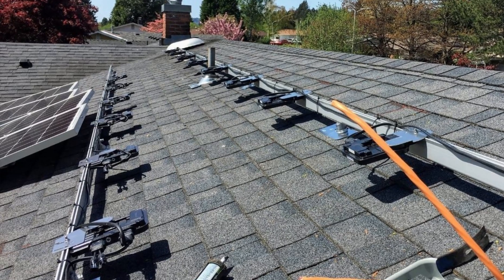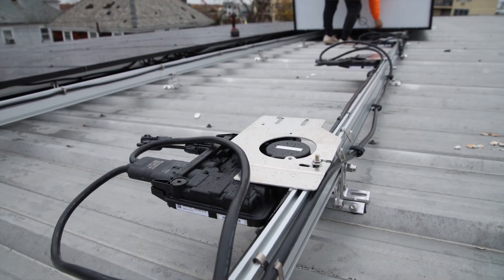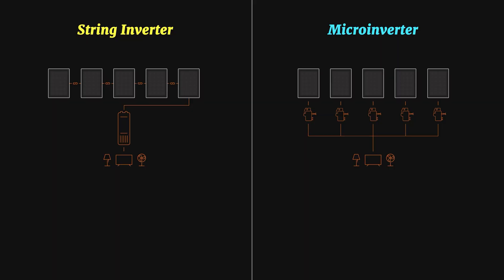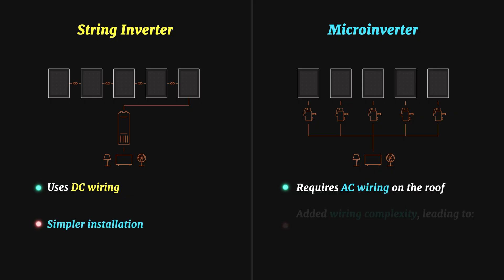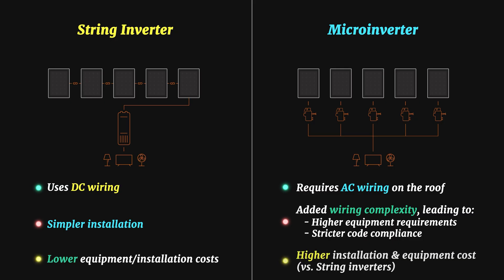However, there is a trade-off. With potentially 20 or 30 inverters installed on the roof, the system's installation becomes a lot more complex. Unlike string inverter setups which use DC wiring, microinverters require AC wiring on the roof. This added complexity, along with the increased equipment requirements and code compliance, generally leads to higher installation and equipment costs for Enphase microinverter systems compared to the traditional string inverter.